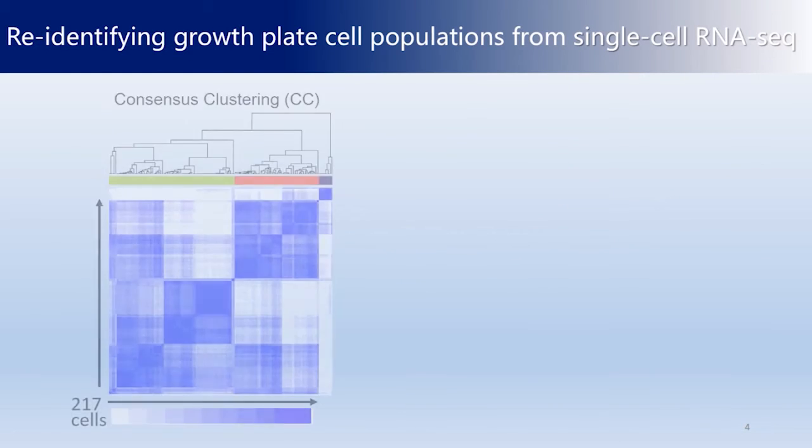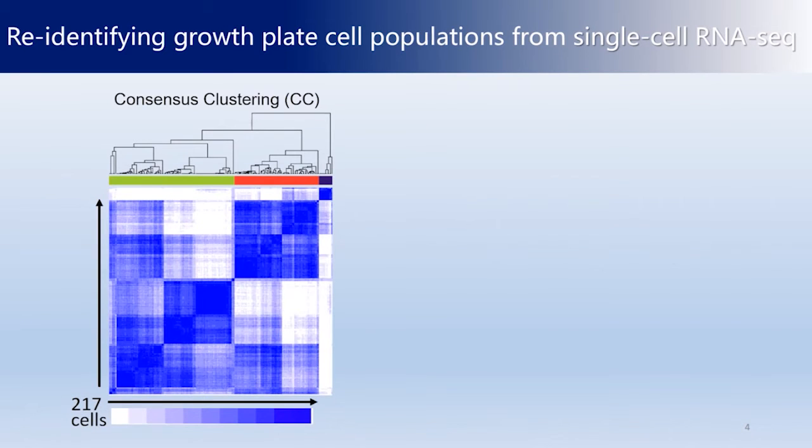Consensus clustering was used to account for the correlation between bodily similar cells throughout the growth plate. At least three distinct cell populations were revealed.